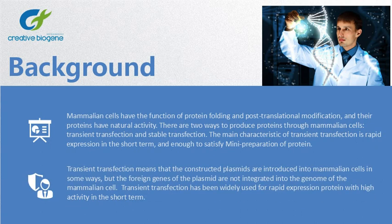Transient transfection means that the constructed plasmids are introduced into mammalian cells in some ways, but the foreign genes of the plasmid are not integrated into the genome of the mammalian cell. Transient transfection has been widely used for rapid expression of protein with high activity in the short term.